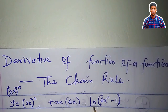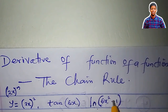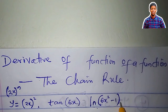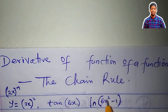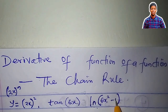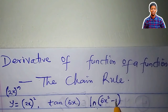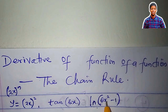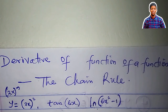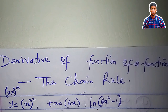Look at this: the natural logarithm of 6x squared minus 1. The ln is a logarithmic function, and 6x squared minus 1 is an algebraic function. The logarithmic function has an inner function of 6x squared minus 1, which is algebraic, and that makes it a function of a function. I can go on and bring more examples, but let's hold it here.